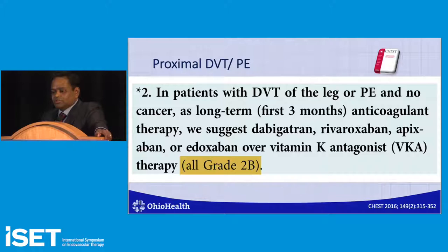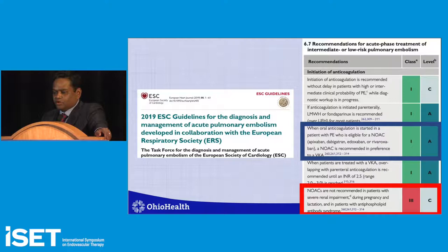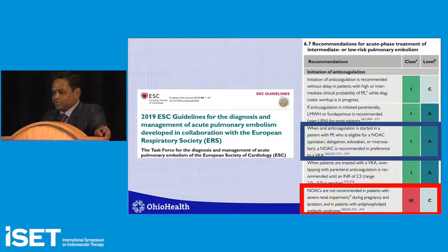Similar guidelines exist for pulmonary embolism — the most recent from the European Heart Association. Oral anticoagulation with a DOAC is a 1A recommendation. DOACs are not recommended in severe renal impairment, pregnancy, lactation, and patients with antiphospholipid antibody syndrome.